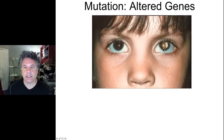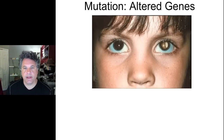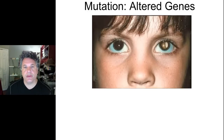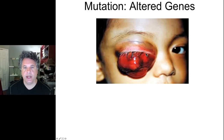We've already talked about retinoblastoma, which involves an altered gene encoding the retinoblastoma protein that, as you know from our studies of cell biology, regulates progression through the cell cycle. This is a mutation in a tumor suppressor gene that produces a non-functional protein, resulting in overgrowth of retinal tissue, which in severe cases, if left untreated, can produce even lethal tumors.